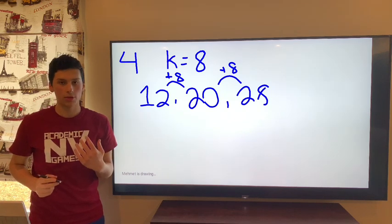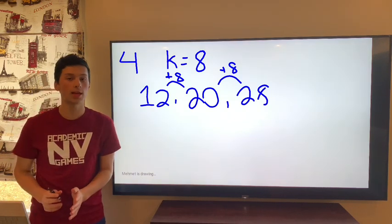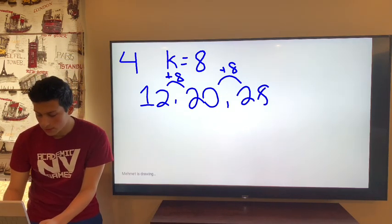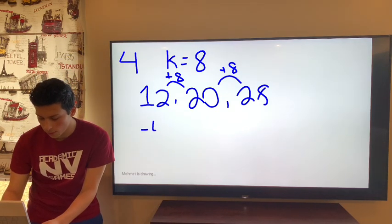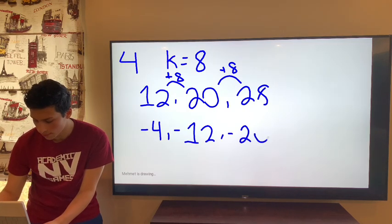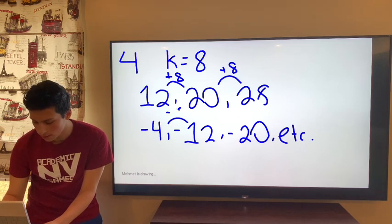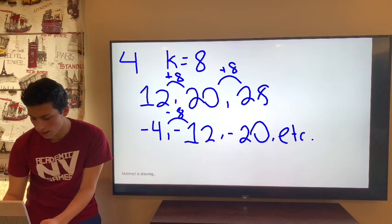It can also go the opposite way. You can subtract 8 or k from the value of your goal as many times as you want. So if we subtract 8 from 4, we have negative 4, then negative 12, negative 20, and so on. And you're subtracting 8, the value of k.